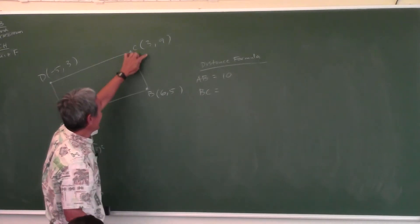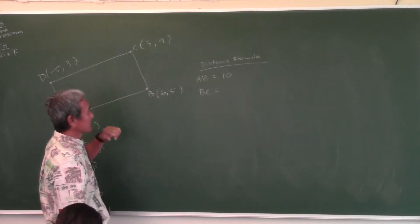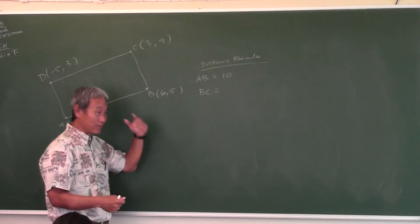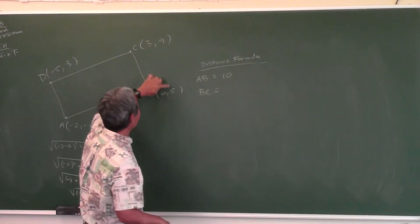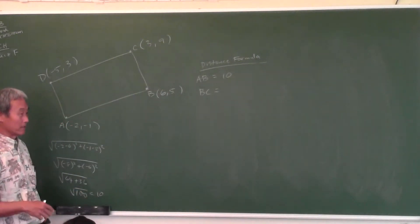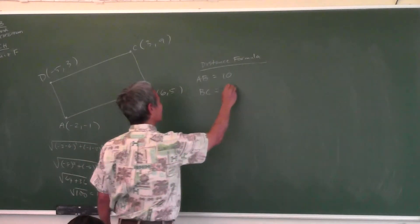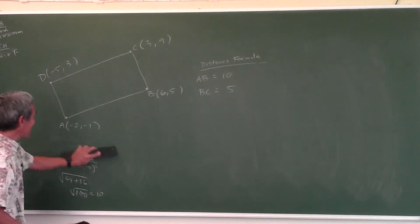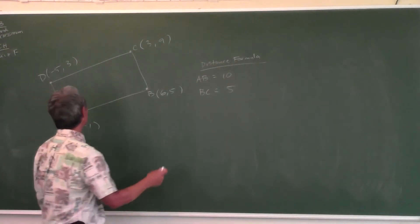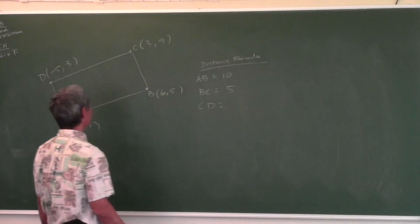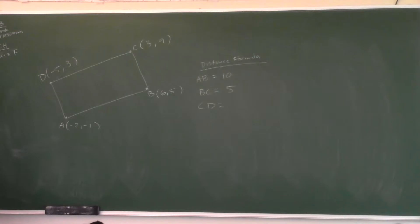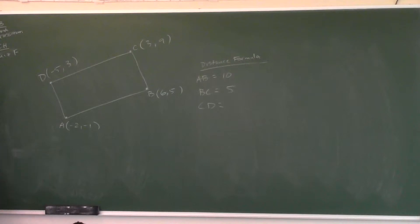For BC: (3 minus 6) squared is 9, (9 minus 5) squared is 16, and 9 plus 16 is 25 — so BC equals 5. For CD: negative 5 minus 3 is negative 8, squared is 64; 3 minus 9 is negative 6, squared is 36; 64 plus 36 is 100, square root is 10. You don't have to show all of this — this is just arithmetic.